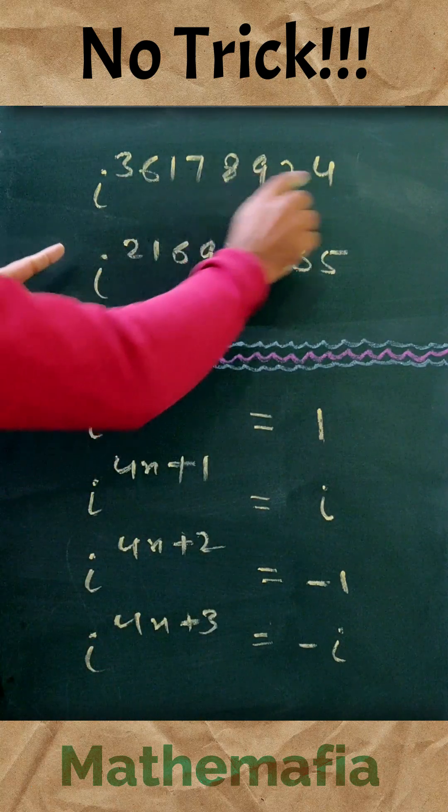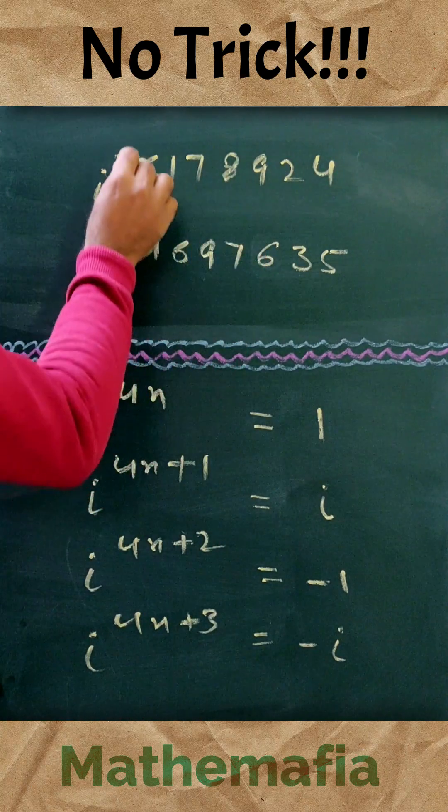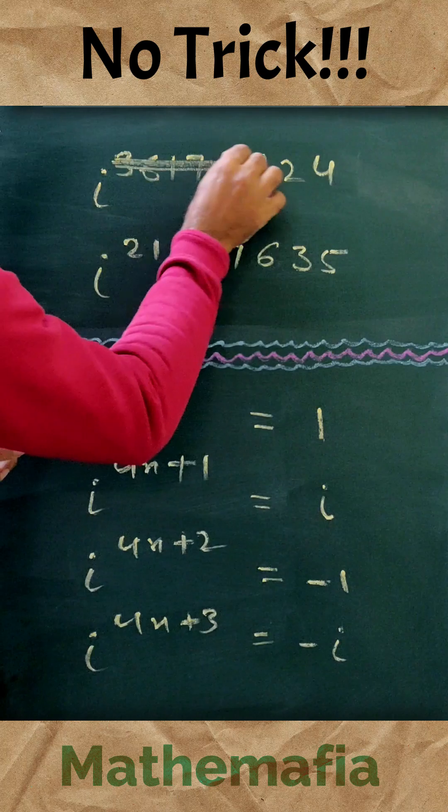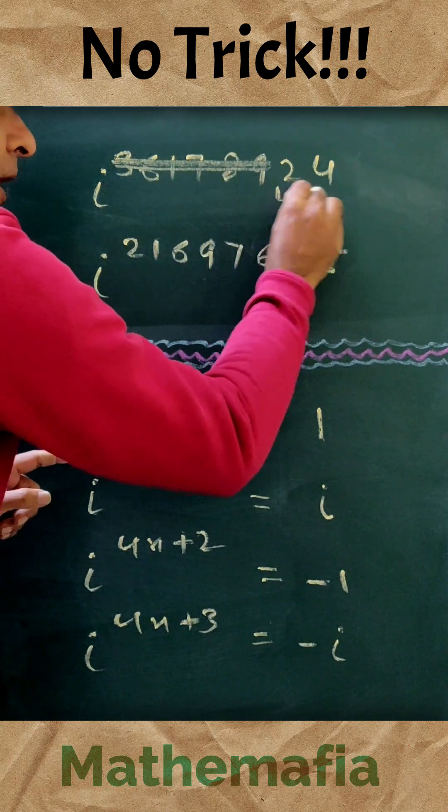Now all we need to find out is the type of this number, and for that all we have to do is ignore all these digits and just focus on the last two digits.